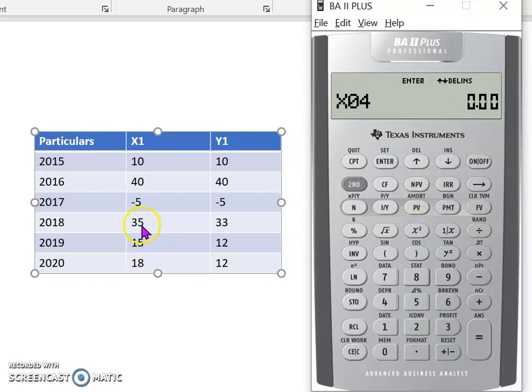For X4, it's 35, so 35, enter, down arrow. Y4 is 33, so 33, enter, down arrow.